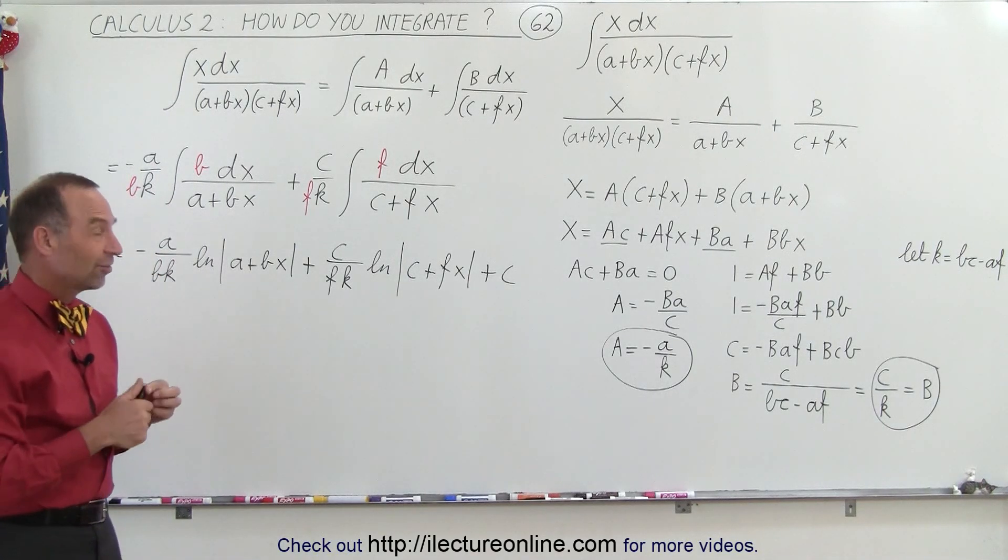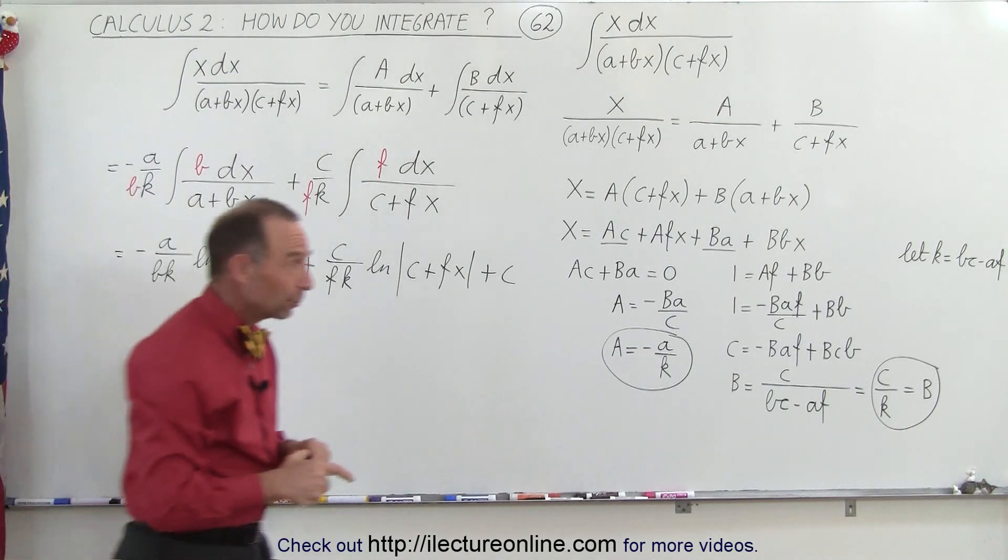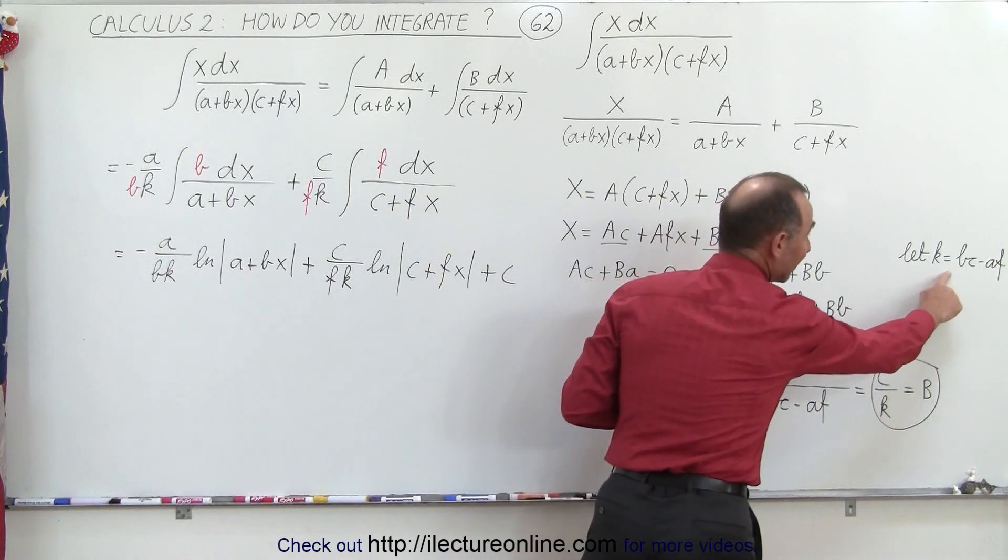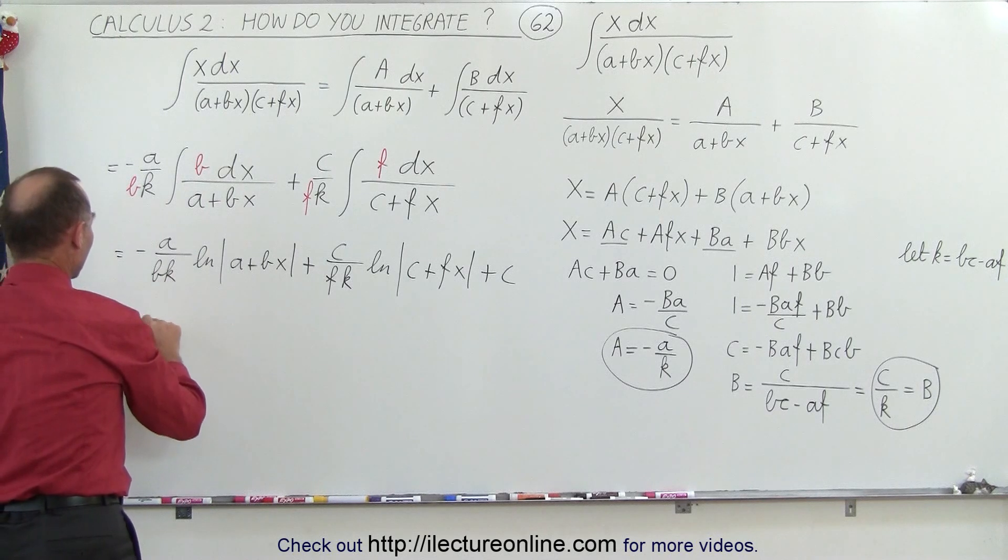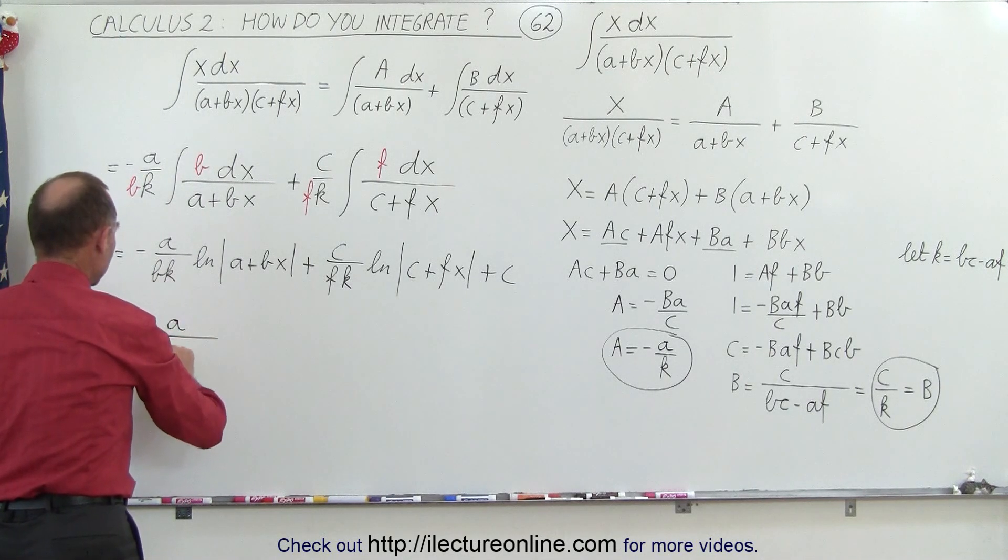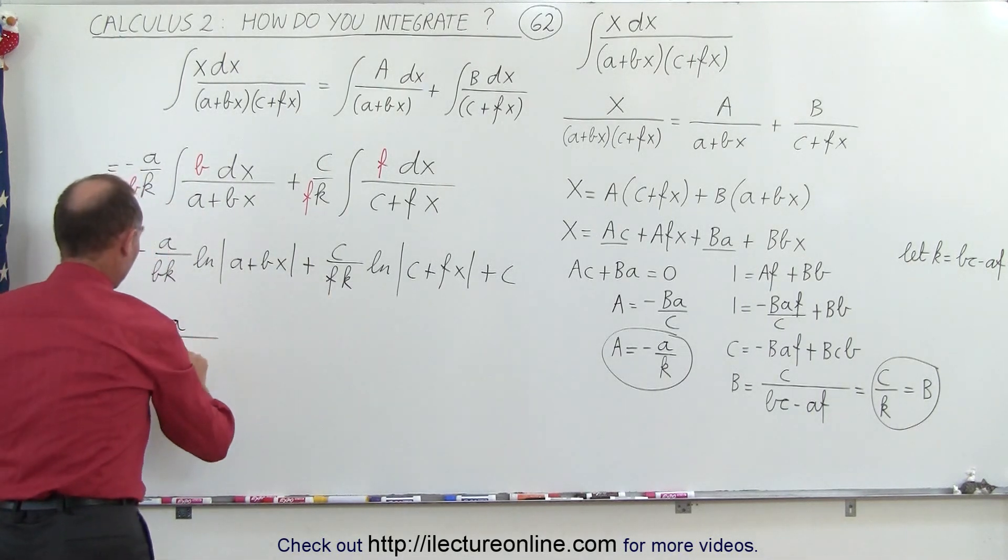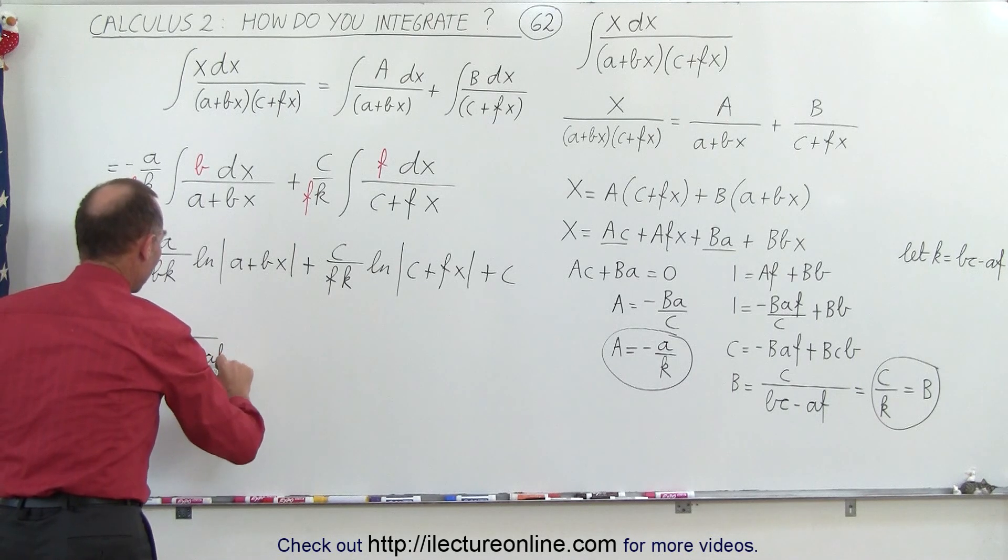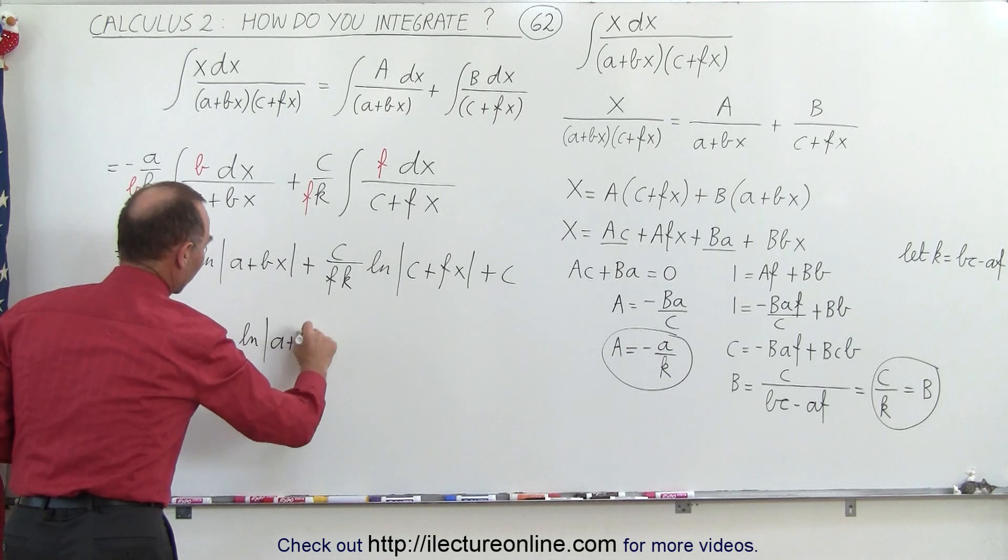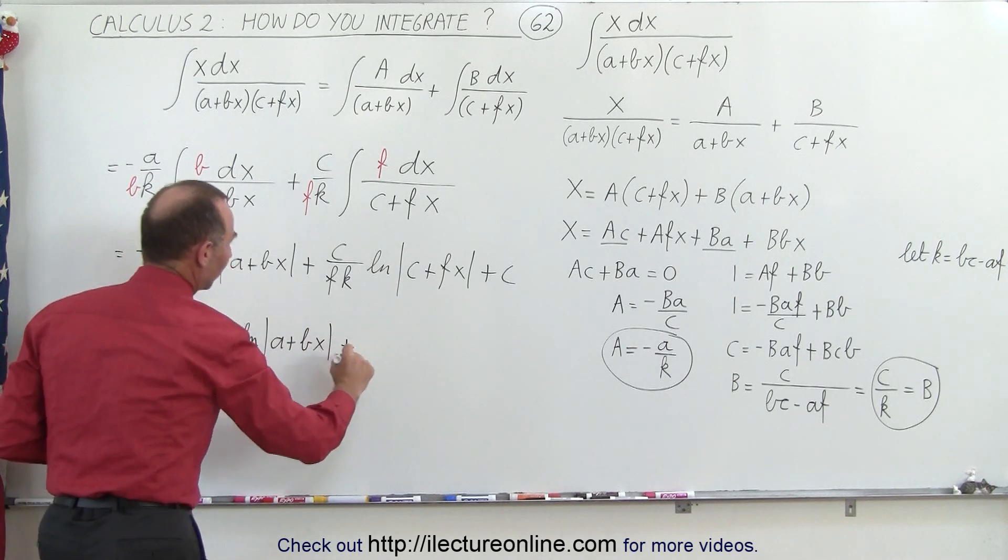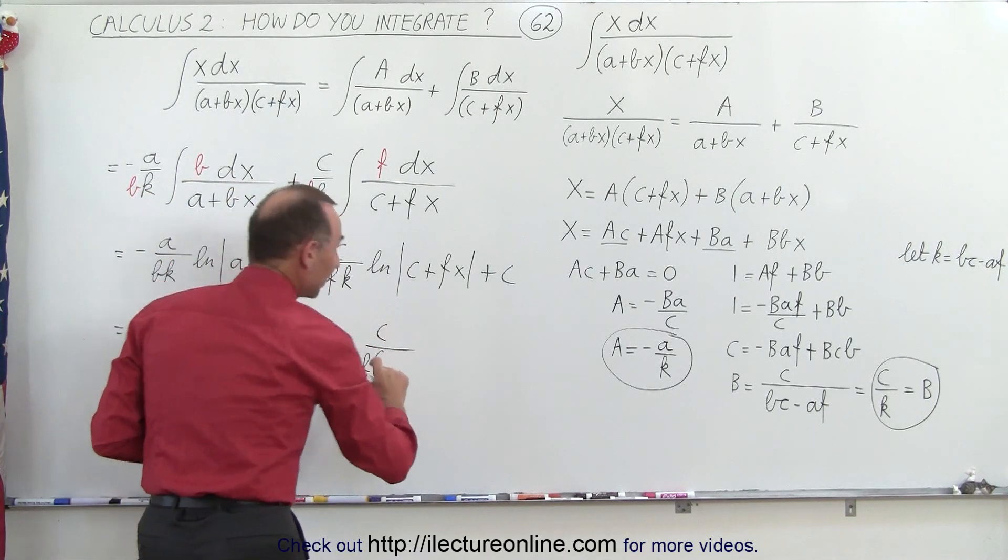And for those who want to see things in a more complete format, realizing that k is equal to bc minus af, then we come back over here. So this can now be written as minus a over b times bc minus af times the natural log of a plus bx plus c over f times, again, bc minus af times the natural log of c plus fx plus a constant of integration.